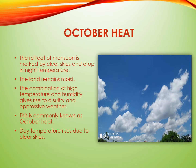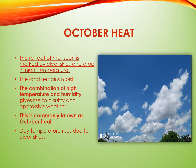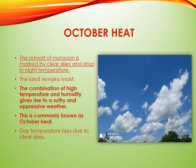October Heat: The retreat of the monsoon is marked by clear skies and a drop in night temperature. The land remains moist, and the combination of high temperature and humidity gives rise to sultry and oppressive weather. This is commonly known as 'October heat.' Day temperature rises due to clear skies. It is a transition period between the hot rainy season and the cold dry season. By the end of October or by the beginning of November, fine weather conditions prevail over the rest of the subcontinent.